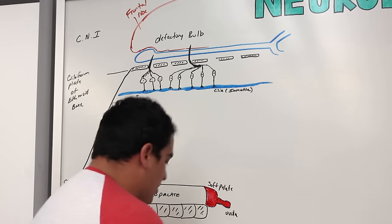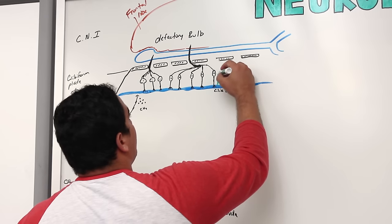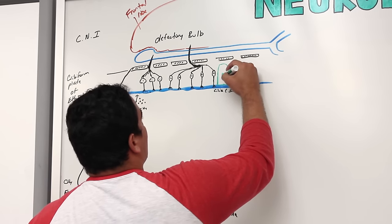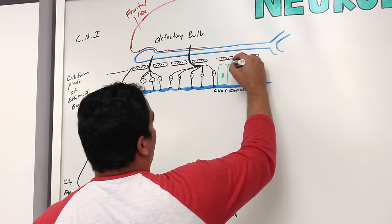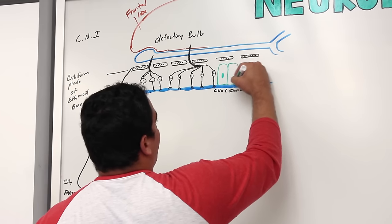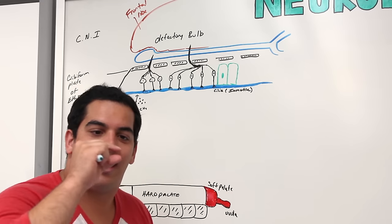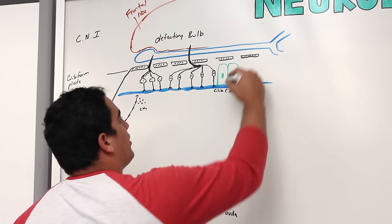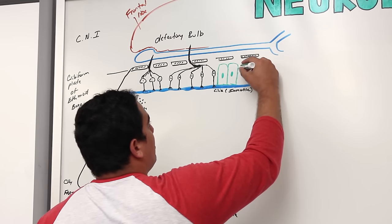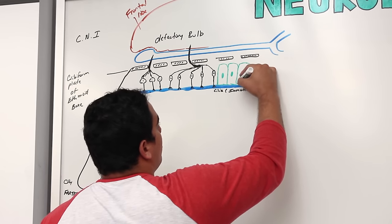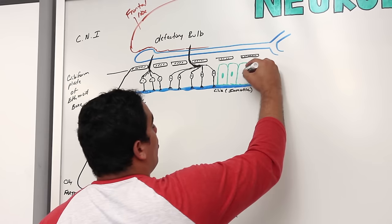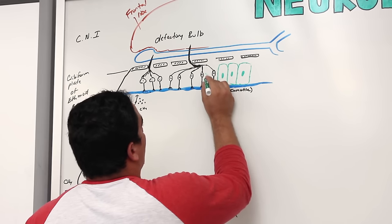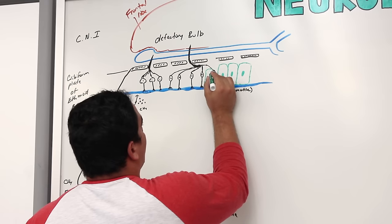Next to the olfactory neurons there are a lot of different types of epithelial cells. These epithelial cells are important because they're about the thickness of a penny — very thin. There are many of them, and they're important for supporting the actual olfactory cells, producing a little bit of mucus, and helping with movement of air. They have motile ciliary extensions.